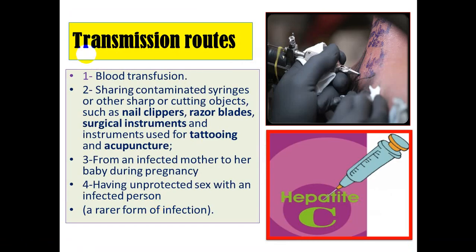There are several transmission routes used by hepatitis C virus. The first is blood transfusion. Several groups are at risk, such as thalassemic patients, hemophilic patients, and chronic anemic patients.